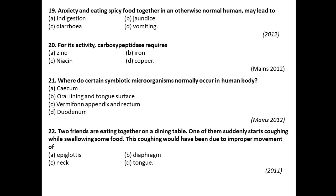Question twenty-two: Two friends are eating together at a dining table. One of them suddenly starts coughing while swallowing some food. This coughing would have been due to the improper movement of? The answer is the epiglottis. The epiglottis is a prevention site for the entry of food into the trachea. The swallowed food enters the trachea due to improper function of the epiglottis. So the answer is option A, the epiglottis.